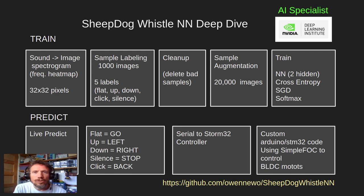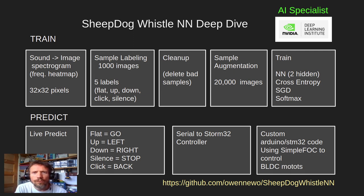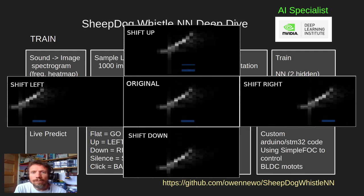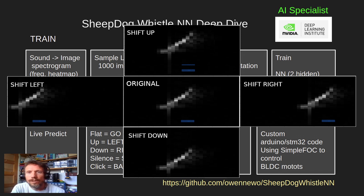Some of my recordings were bad, so I deleted some of the sampling images — typically when I did a bad whistle or the whistle was off the frame. I then turned my 500 images into 20,000 images by shifting the images left and right and up and down, which helps the neural net generalize better.